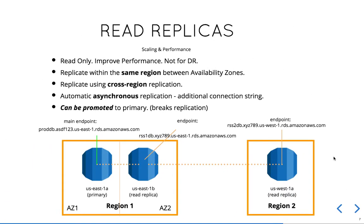The other mechanism for replication is read replicas, which is a little different from multi-AZ deployments. Where multi-AZ focuses on high availability, read replicas focus on scaling and performance. The function of a read replica is read-only — you would point application nodes to the read-only connection string of the read replica for read operations, while read-write operations still go against your main endpoint pointing to your primary database.